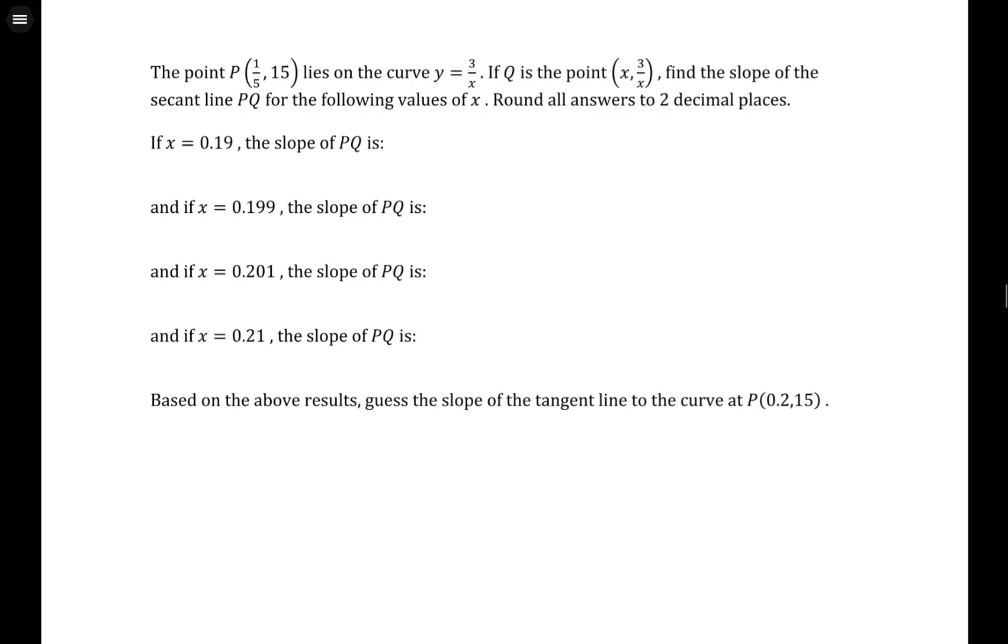So whatever the curve of this function looks like, 3 over x, it's an inverse function. It should look something to this effect right here. We would have a vertical asymptote at 0, so it's undefined. It should basically look something like this.